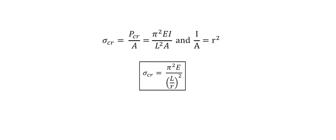For the purpose of engineering design, it is common to express buckling capacity in terms of stress: sigma critical equals critical load over area, equals pi squared times EI over L squared times A, where I over A equals R squared and R is the radius of gyration. Buckling occurs about the axis where the slenderness ratio L over R gives the greatest value, relating all relevant geometric parameters L, I, and A.